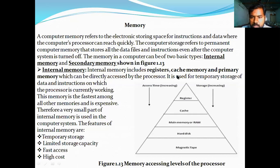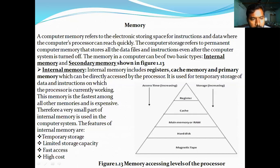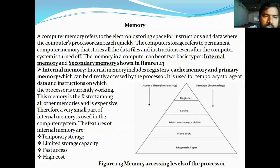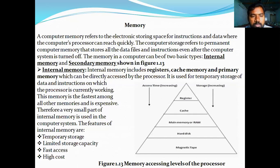The first type is internal memory — registers, cache memory, and primary memory — which can be directly accessed by the processor. It is used for temporary storage of data and instructions on which the processor is currently working. For temporary purpose, we use internal memory, and for permanent purpose, we use secondary memory.